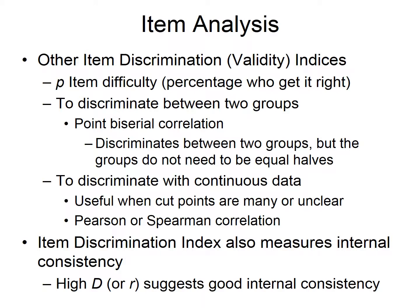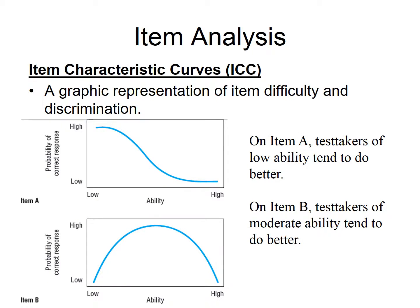We can also use item discrimination indices to measure internal consistency — high D's or R's suggest good consistency. Once we calculate either an R or a D for each individual item, we can average those across all items to get a general index of the measure, not just the item. The higher this total average is, the higher the internal consistency it indicates.